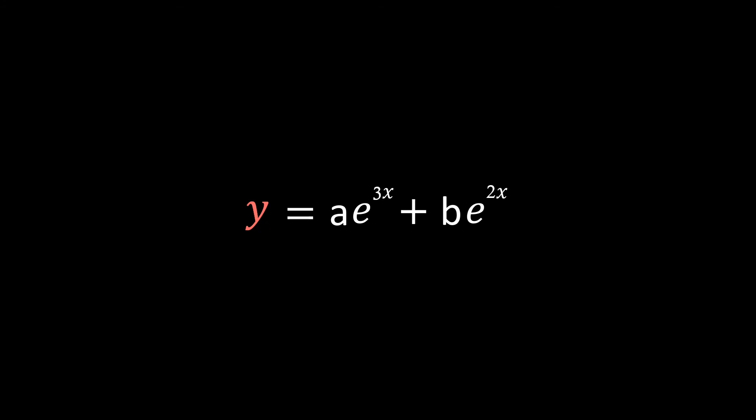If we did have any initial conditions, this would become an initial value problem, or a boundary value problem, but we'll cover these in a later video. Therefore, our general solution is just that y equals a e to the 3x plus b e to the 2x, where a and b are just constants.